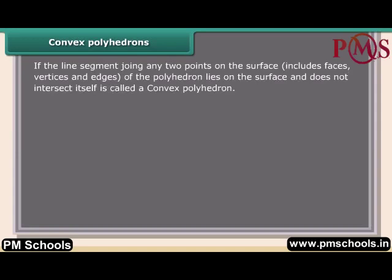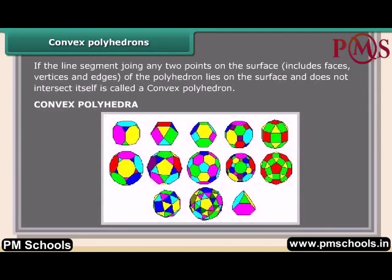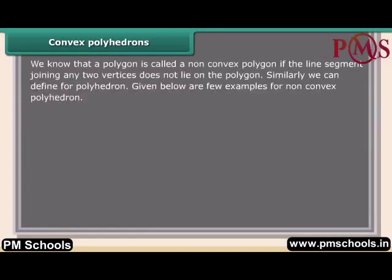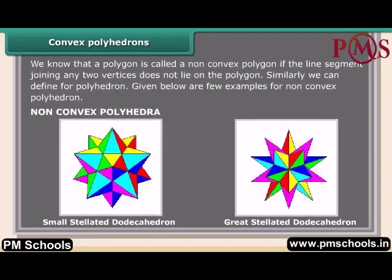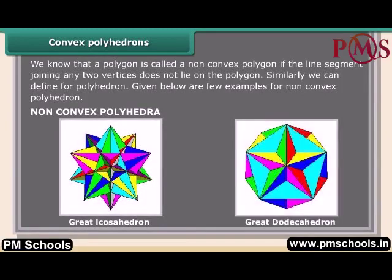A convex polyhedron is one where the line segment joining any two points on the surface lies on the surface and does not intersect itself. A non-convex polygon is one where the line segment joining any two vertices does not lie entirely on the polygon. Examples of non-convex polyhedra include the small stellated dodecahedron, great stellated dodecahedron, great icosahedron, and great dodecahedron.